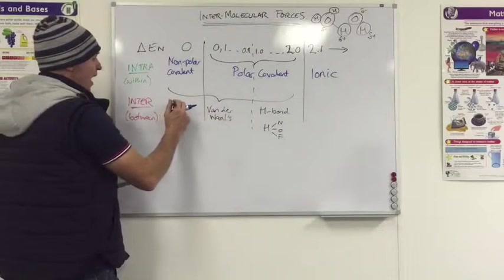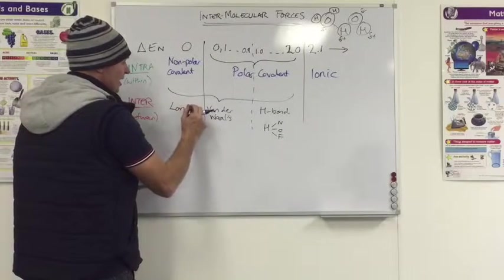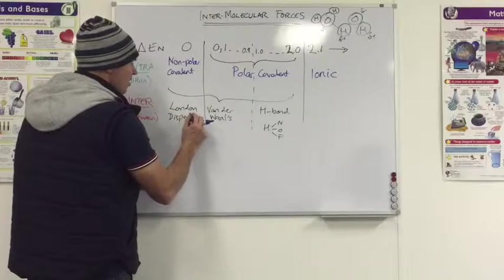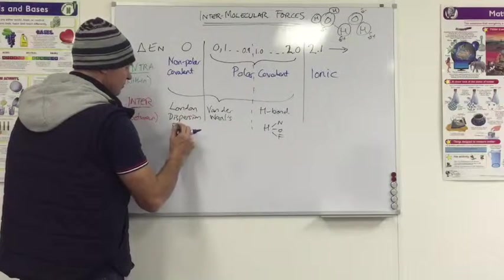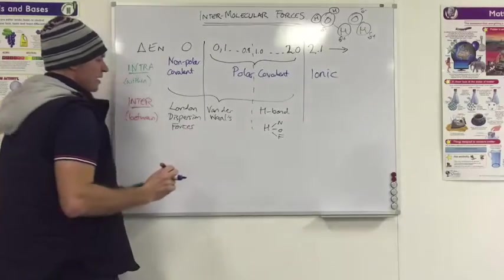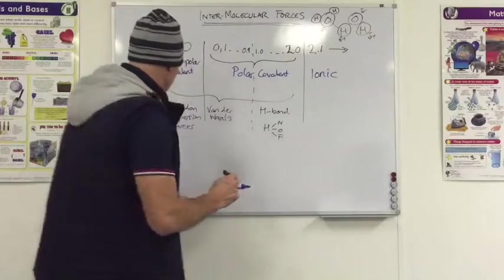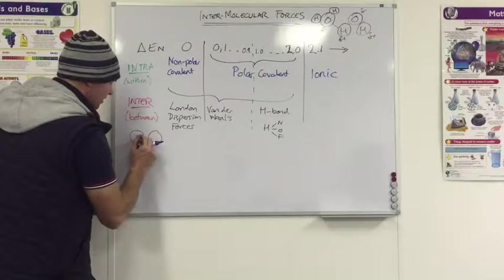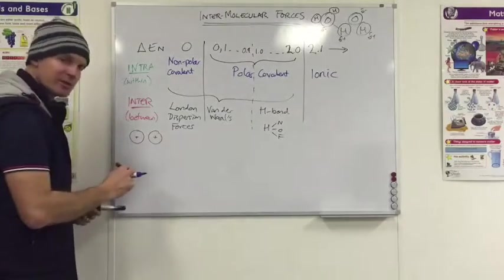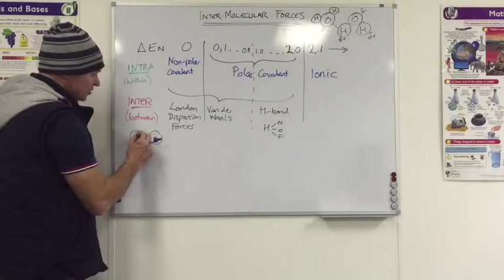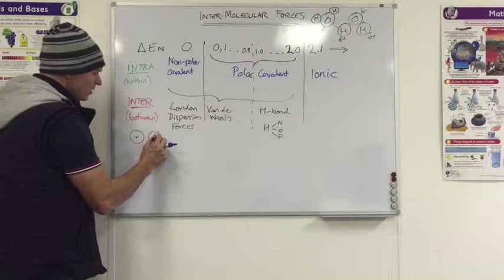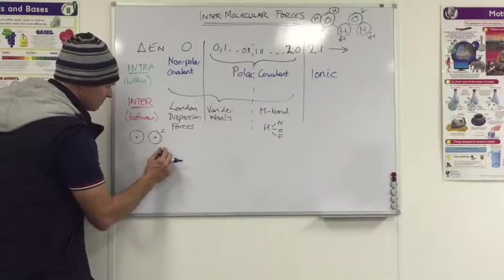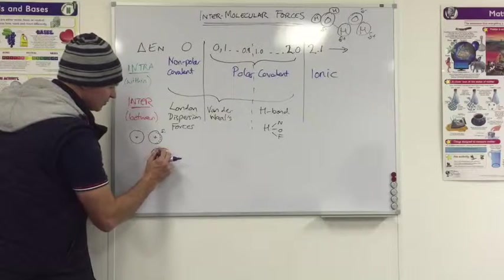On the weak side of the family, we've got something we call London forces or London dispersion forces. They are just temporary polarities that form. So it's when one molecule passes by another, you've got the positive in the middle like that with the nucleus. The electrons of the one might just slightly repel these ones away, causing a slightly polar situation.